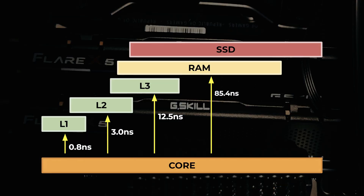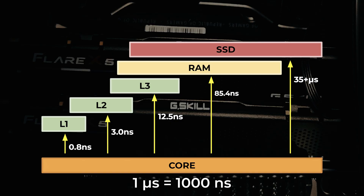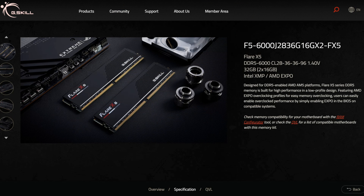Beyond that, you've got virtual memory on your SSD. Even though modern SSDs are fast, latency here is measured in microseconds — thousands of times slower than RAM. That's why having enough physical RAM is so important to avoid performance drops.